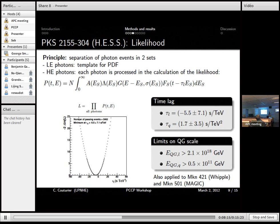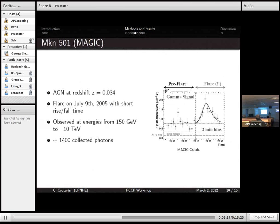Another AGN that has been analyzed by MAGIC, Markarian 501. It's located at redshift 0.03. And MAGIC observed the flare of this object in 2005. And they observed photons ranging from energy ranging from 150 GeV to 10 TeV. And they got a bit more than 1,000 photons. So this is the light curve for all energies.